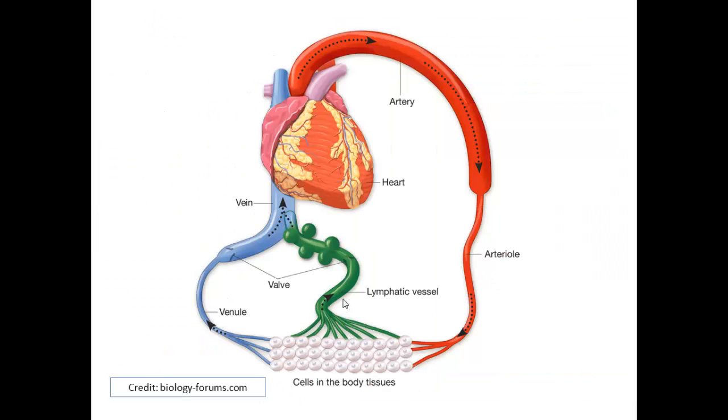This is how that lymph is then returned to the circulatory system - it comes along a lymphatic vessel and that drains into a vein, drains just actually quite close to the heart in the vena cava and that returns it back to the circulation.